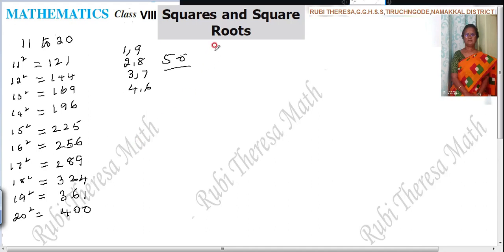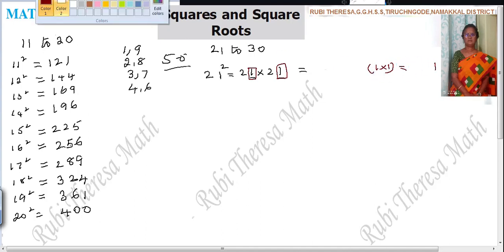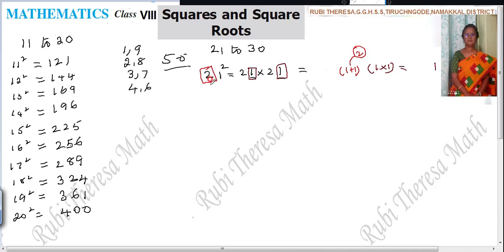Next one, 21 to 30. 21 square. This is nothing but 21 into 21. But I told you previously, how you have to multiply. You have to take the unit places. 1 into 1. 1 once or 1. Next to 1, what you have to take? The same unit places only. 1 plus 1 is 2. And this is multiplied by 2. Because the number starts with 2. 1 plus 1 is 2. 2 2's are 4.